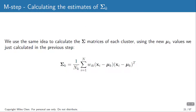For the variance matrix estimate, we take X minus mu times X minus mu transpose — giving a 2-by-2 matrix — and multiply it by the weight. This gives the weighted variance estimate. You need mean and variance estimates for all three components. That's your homework this week — I've left out the code because I want you to write it yourselves.